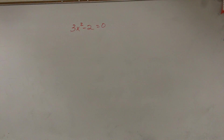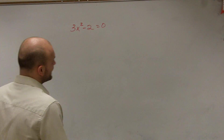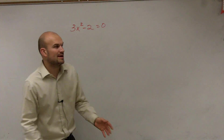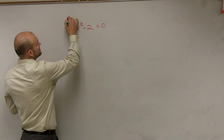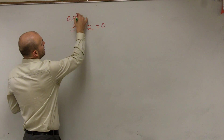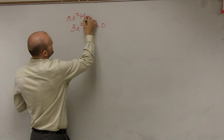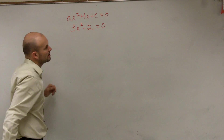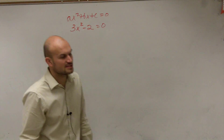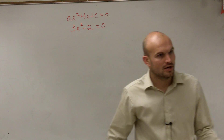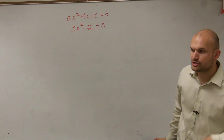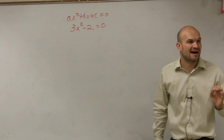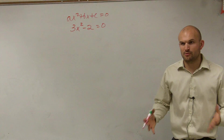To solve by quadratic formula, the main important thing we need to understand is that a quadratic equation can be written in the form ax squared plus bx plus c equals 0. We have to make sure that it equals 0 to find our a, b, and c.